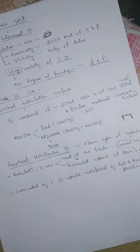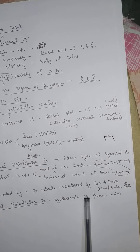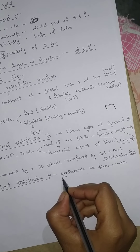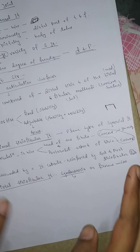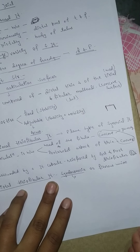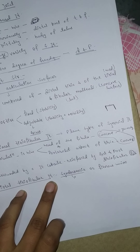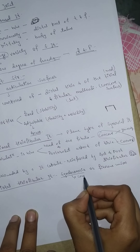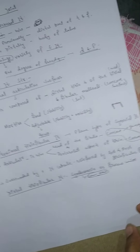The distal tibiofibular joint is a syndesmosis type of joint — a fibrous union where bones are directly linked by connective tissue. In the case of the distal tibiofibular joint, the bones are linked with a fibro-adipose connective tissue.